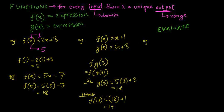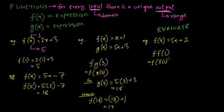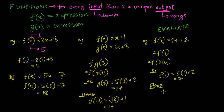Let's do another example. Suppose f(x) = 5x + 2 and they ask for f(f(1)). First find f(1): 5×1 + 2 = 7. Hence f(f(1)) = f(7) = 5×7 + 2 = 35 + 2 = 37. That's how you evaluate a composite of the same function.